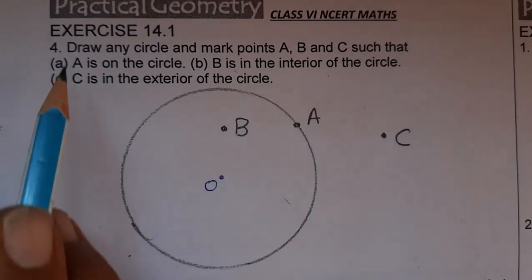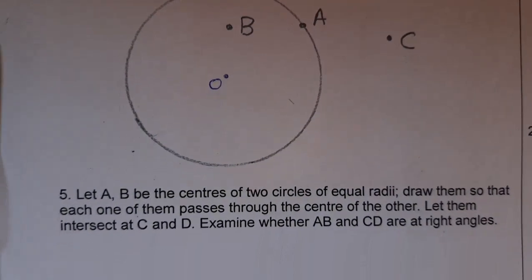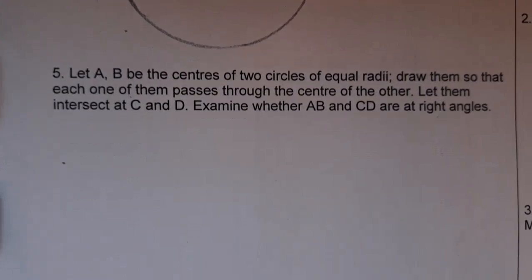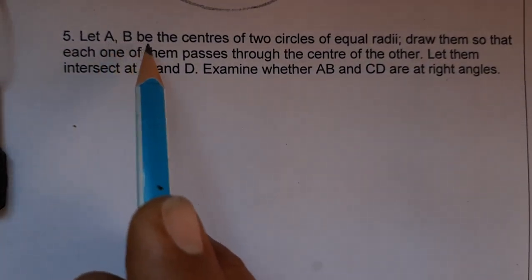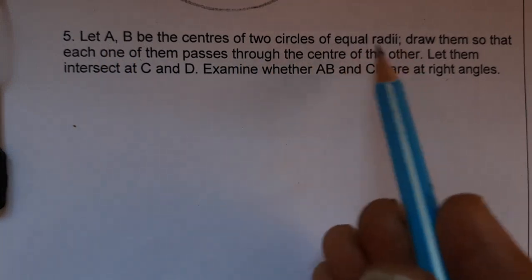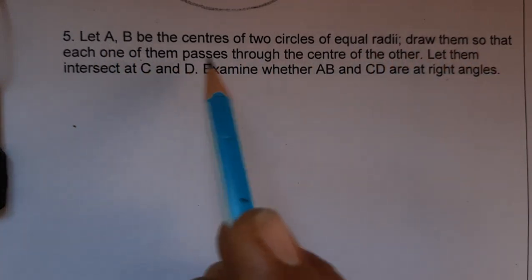So this completes question number 4. Now we'll do question number 5 also. Question 5 is: Let A, B be the centers of two circles of equal radius. Draw them so that each one of them passes through the center of the other.